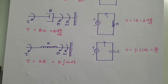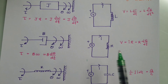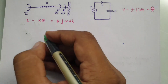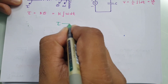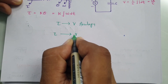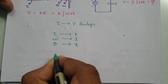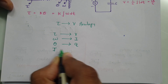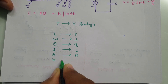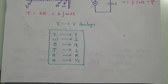Whenever you do torque-voltage analogy, replace elements as follows: moment of inertia J with inductance L, damping constant B with resistance R, and spring constant K with capacitance 1/C. To summarize: torque is replaced by voltage, angular velocity is replaced by current, angular displacement is replaced by charge, moment of inertia J is replaced by inductance L, damping constant is replaced by resistance R, and spring constant is replaced by 1/C.